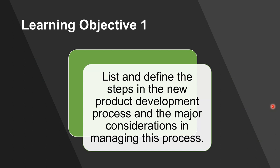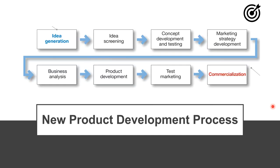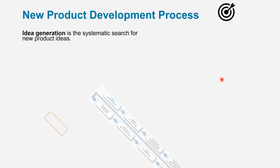Objective number one is to list and define new product development processes and the considerations in this process. New product development has a core process of eight steps, all the way from idea generation to commercialization. We're actually going to walk through each step and discuss the pros and cons of each.